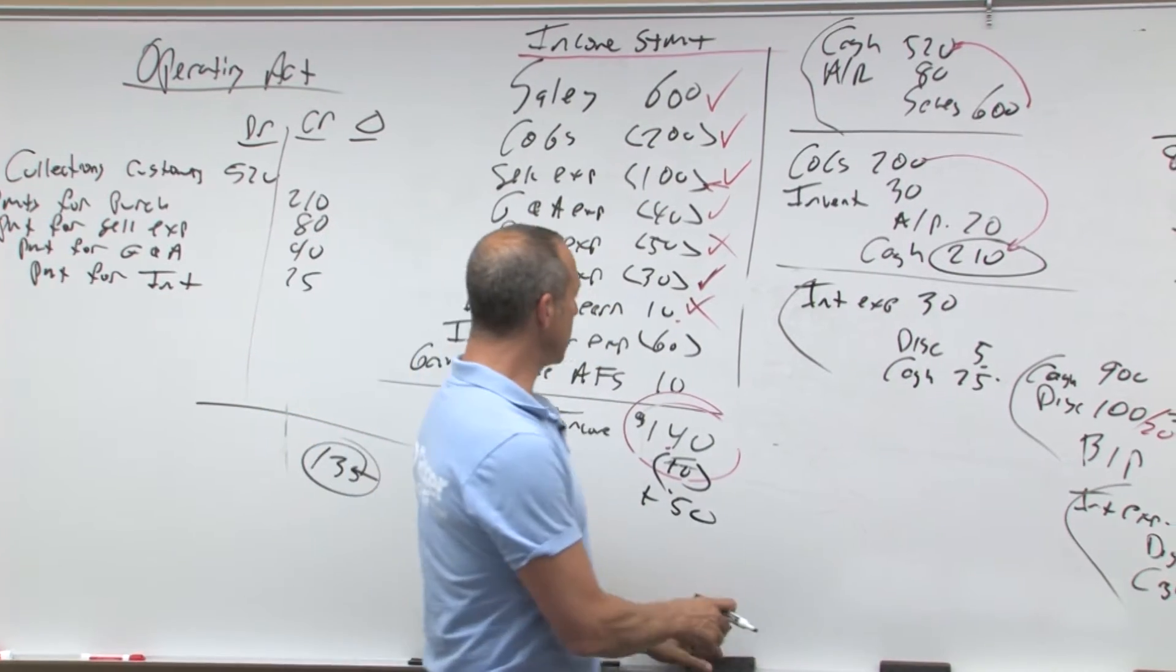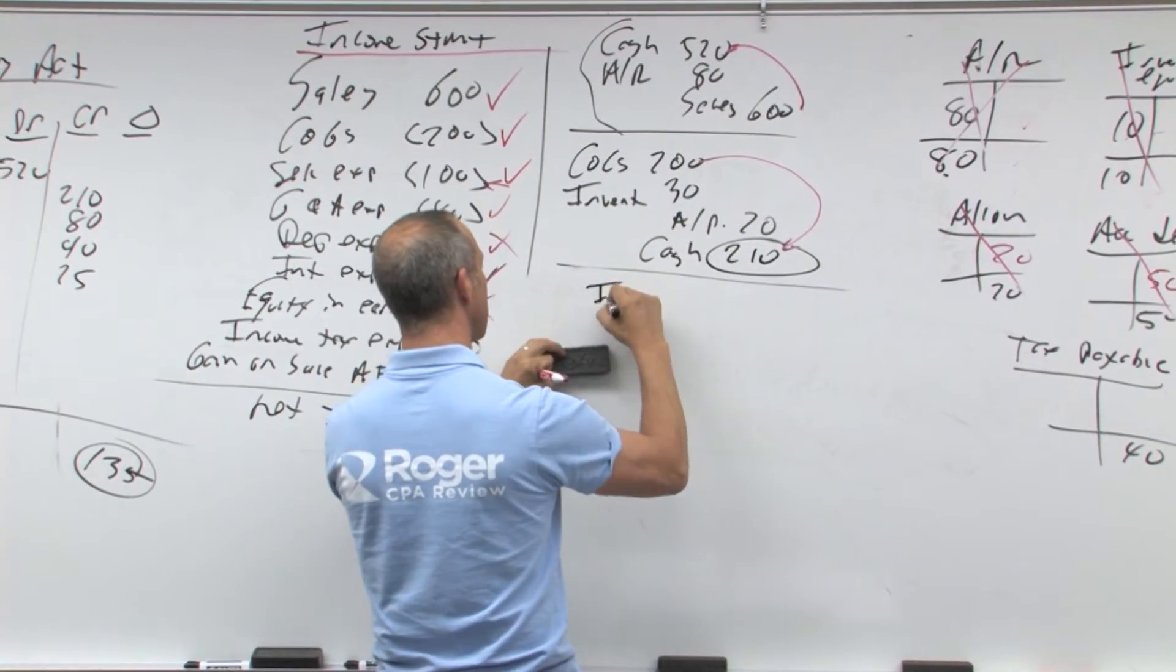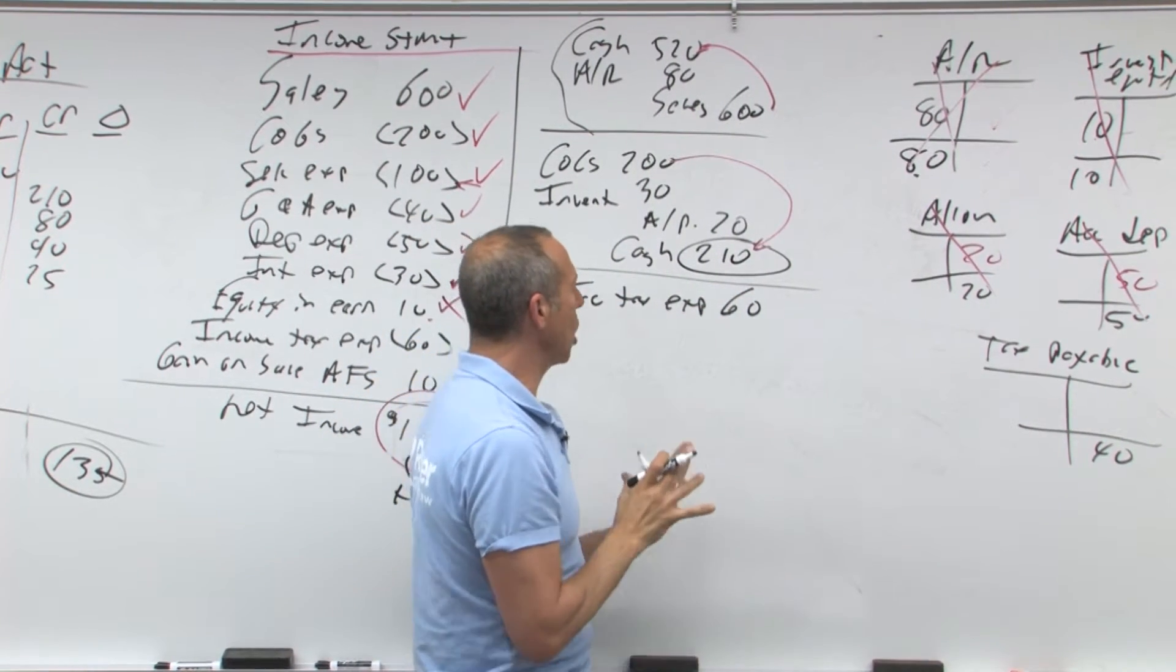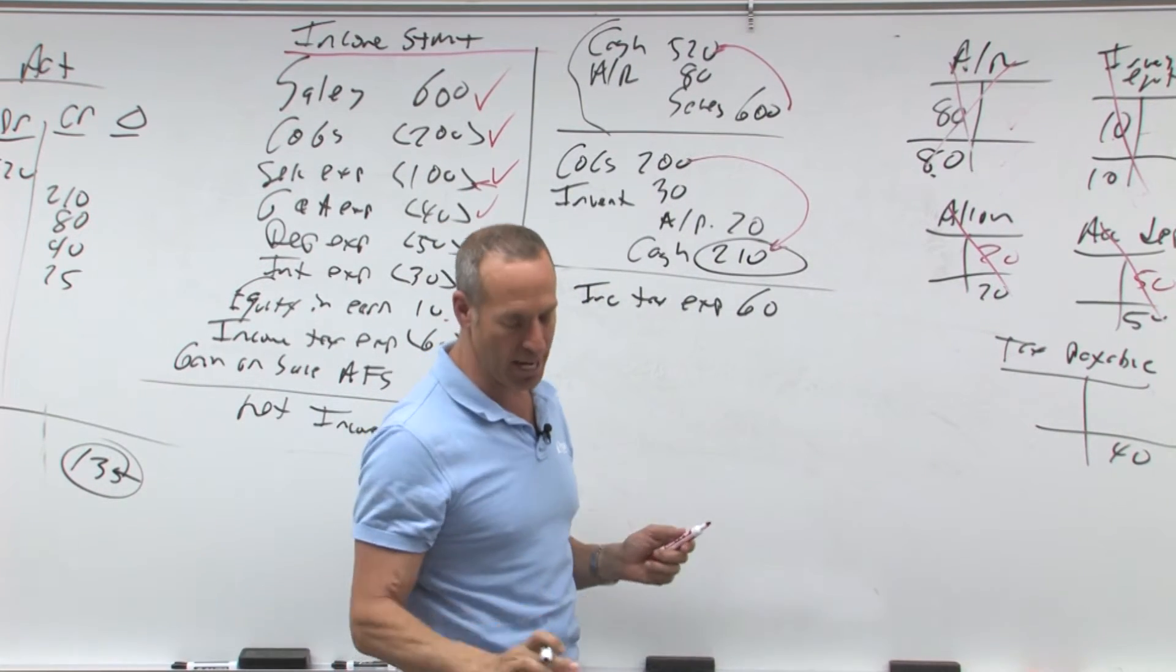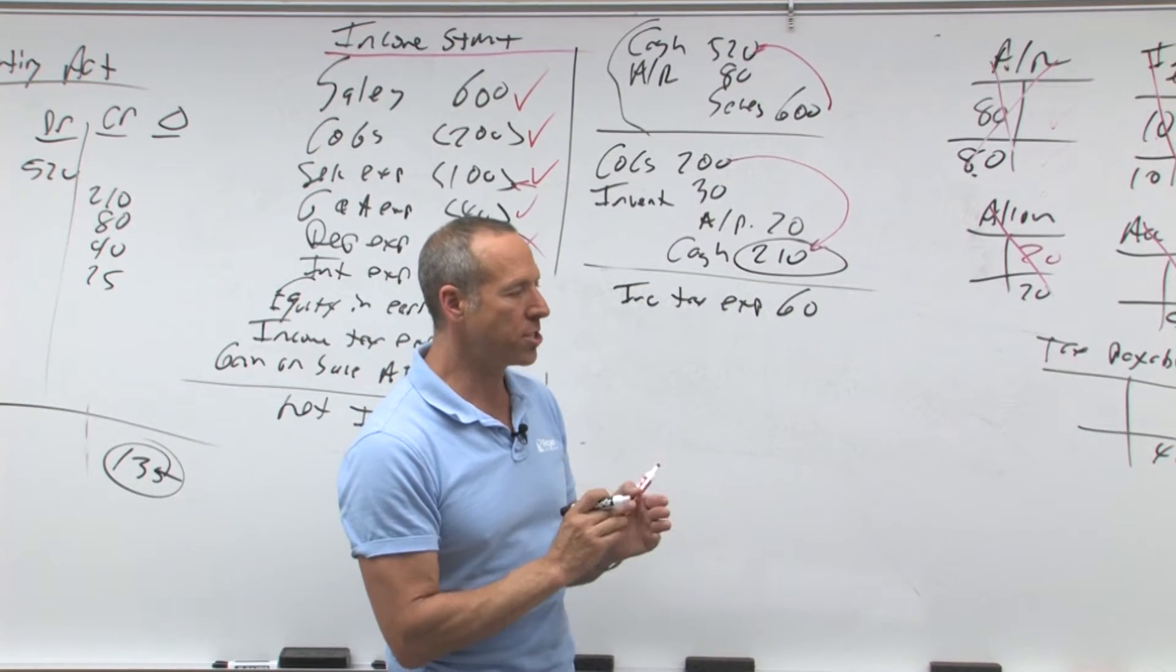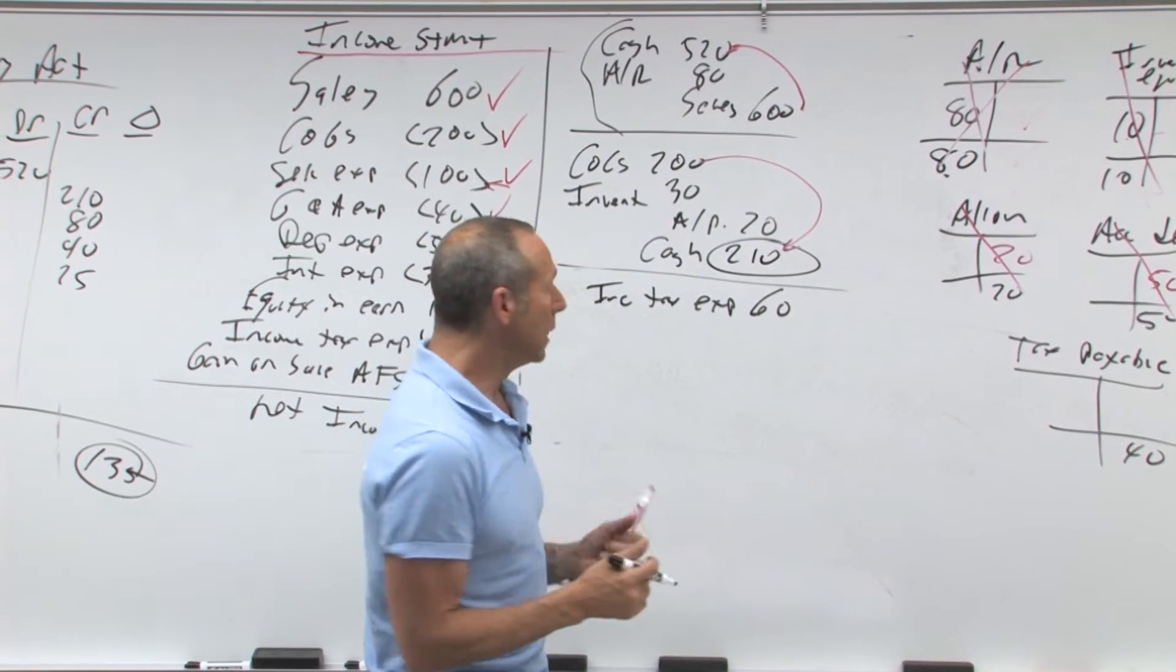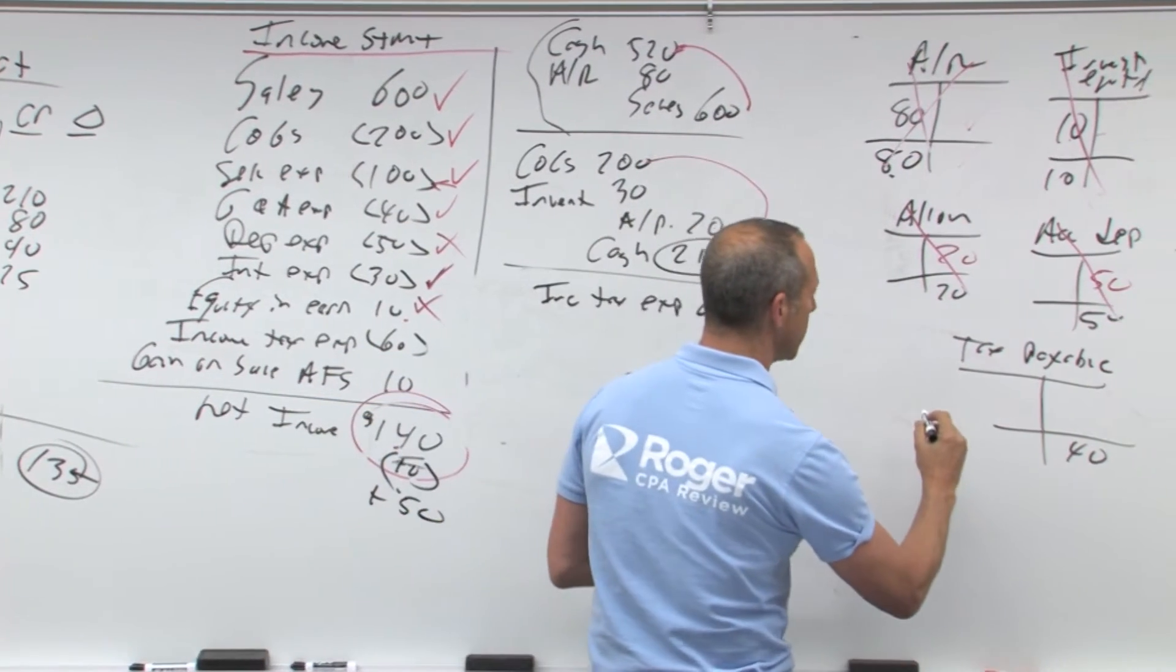Income tax expense is $60. So now what we need to do is figure out what caused the changes. Remember we talked about deferred taxes not too long ago. Some of the changes are going to be due to deferred taxes, some tax payable. So we're going to have a credit to tax payable, and let's look at what the increase was.